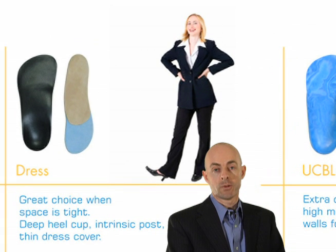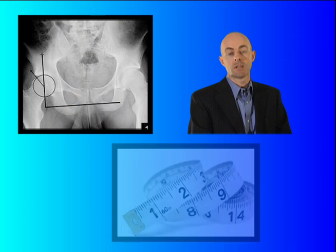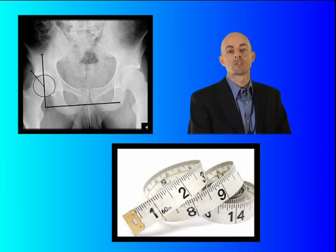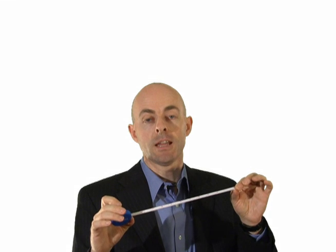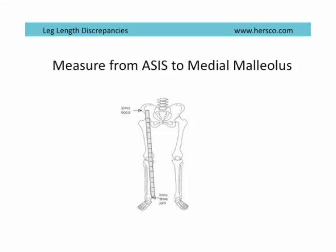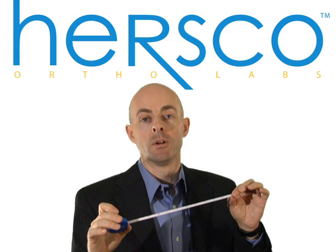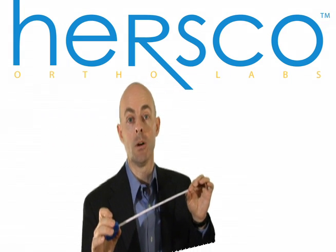I like to approach leg length discrepancies from a practical perspective. The first goal is always the patient's comfort. Even if the leg length discrepancy has been measured using an x-ray or a tape measure, patient comfort is of primary importance. The classic measurement uses a tape measure from the ASIS — the anterior superior iliac spine — to the medial malleolus. Some practitioners also take a measurement from the navel to the medial malleolus.